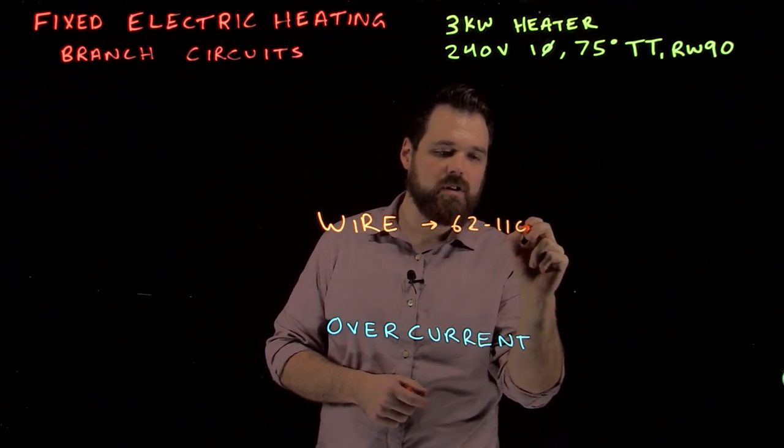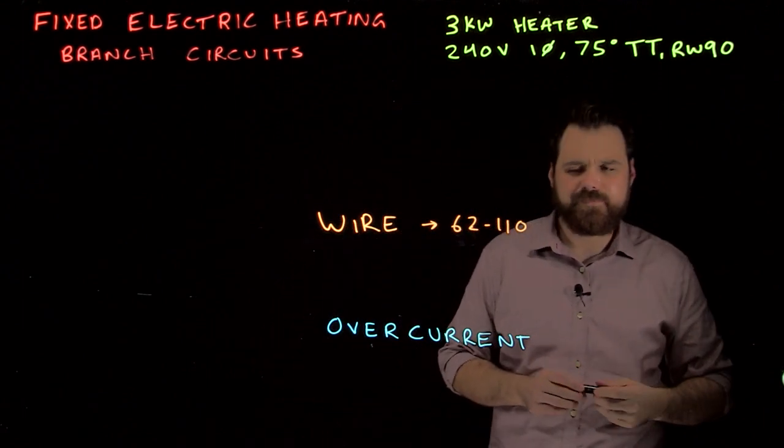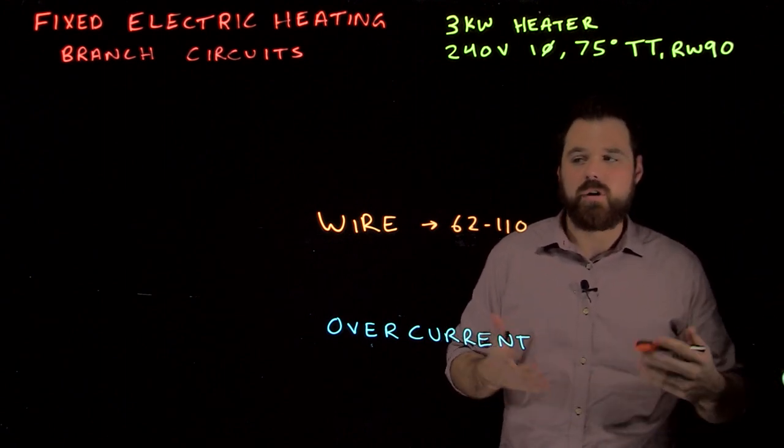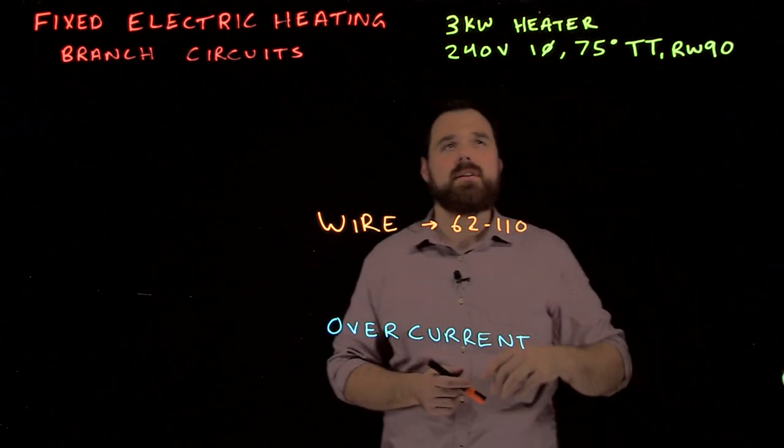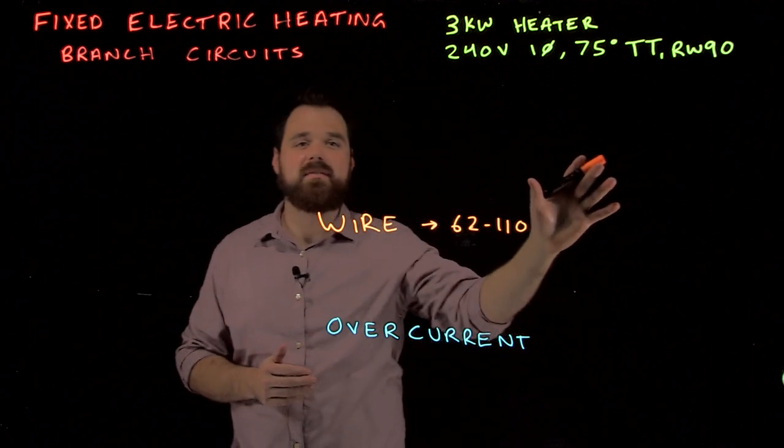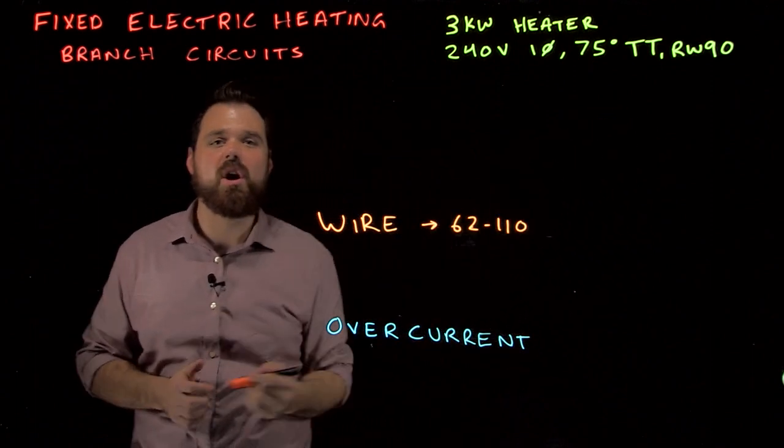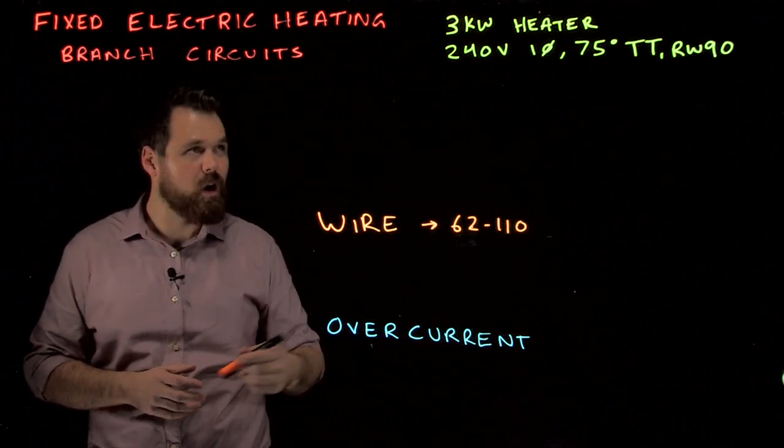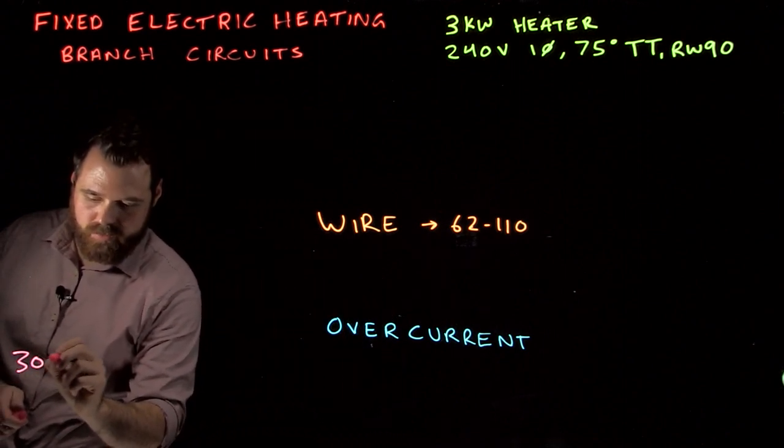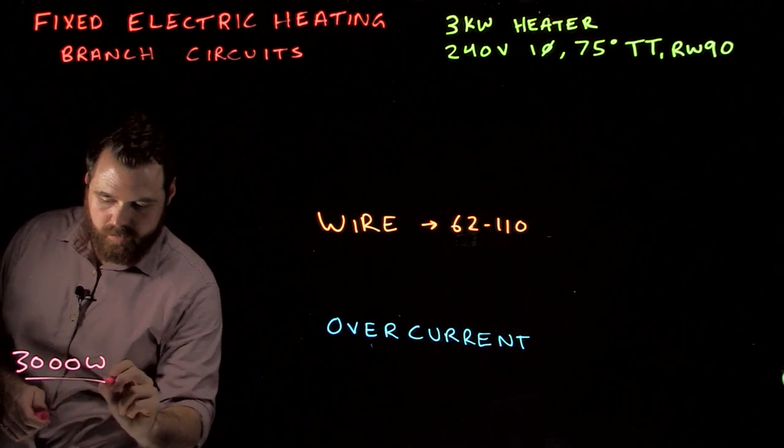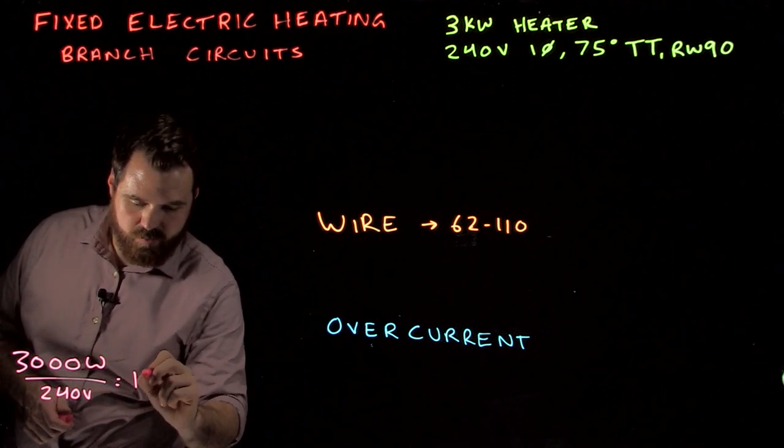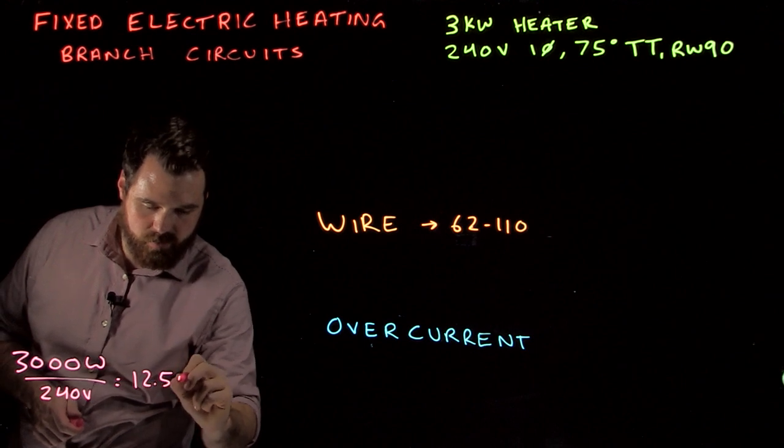62-110 talks about conductors. It basically tells us conductors need to be able to handle the load. So in this case we are dealing with a 3 kilowatt heater, 240 volts single phase with a 75 degree termination temperature using RW90 wire. Well, in this case for our load we are going to go 3,000 watts divided by 240 volts which is going to give us 12.5 amps.